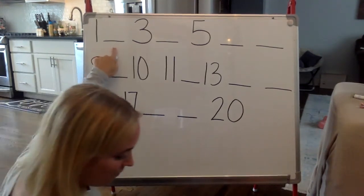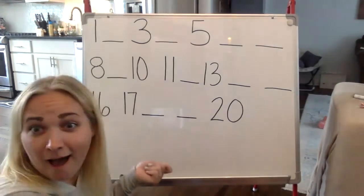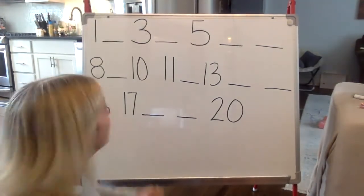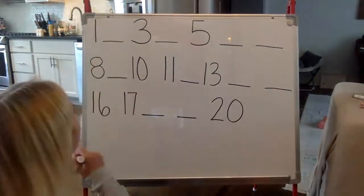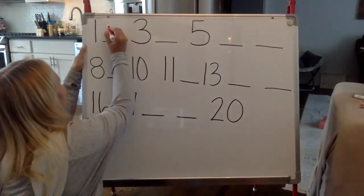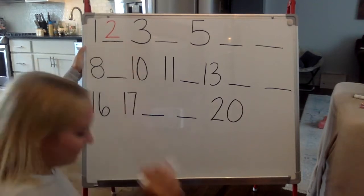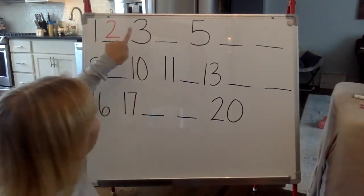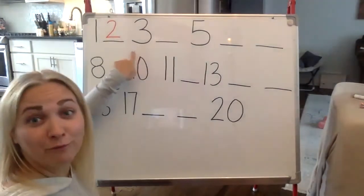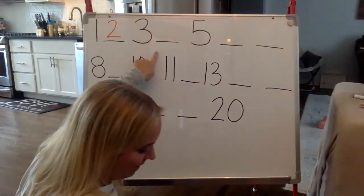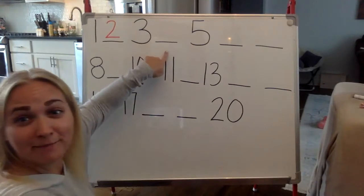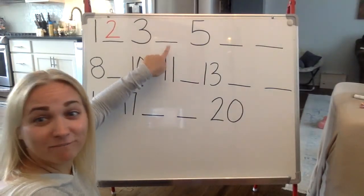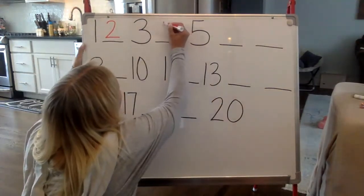One, two. So we have our first missing number. One, two, one, two, one, two. Here we go. Let's keep going. Three, four, three, four, five, six, seven. Three, what came next? Four.